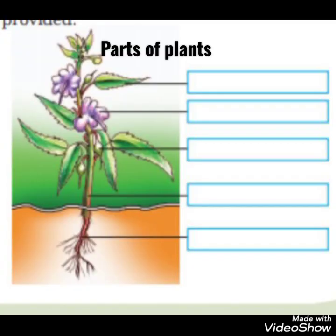We have studied about the parts of plants: flowers, seeds, leaves, stem, and root. You also need to draw the picture of a plant in your notebook and mark the parts of the plant.